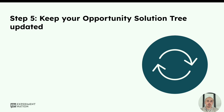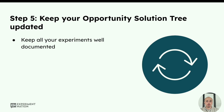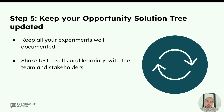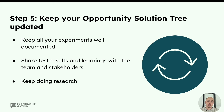Now comes step five: keep your Opportunity Solution Tree up to date. It's important to keep all experiments well documented — what have you been testing, what opportunity was it focused on, what was the psychological tactic, what was the source of the insight? You want to share the test results and learnings with the team and stakeholders so that everyone can learn from the experiments. And of course, keep doing your research. The opportunity space isn't a one-time static thing — the more you test, the more insights you get back, and you want to keep talking to your customers so your Opportunity Solution Tree evolves over time.